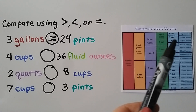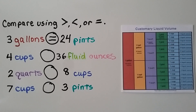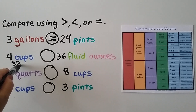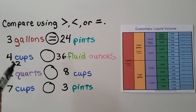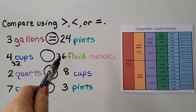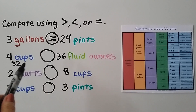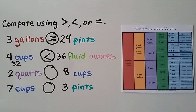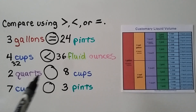Four cups compared to 36 fluid ounces: we change cups into fluid ounces. One cup is eight fluid ounces, so four cups is four times eight, which is 32 fluid ounces. We're comparing 32 fluid ounces to 36 fluid ounces — 32 is less than 36, so four cups is less than 36 fluid ounces.